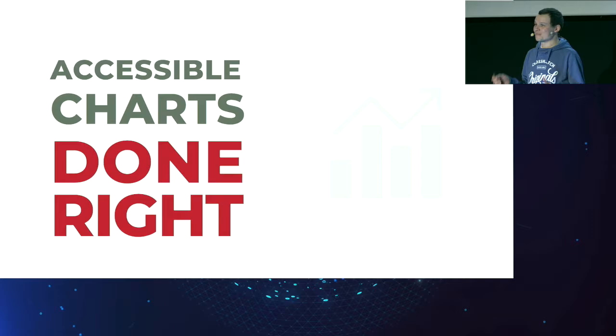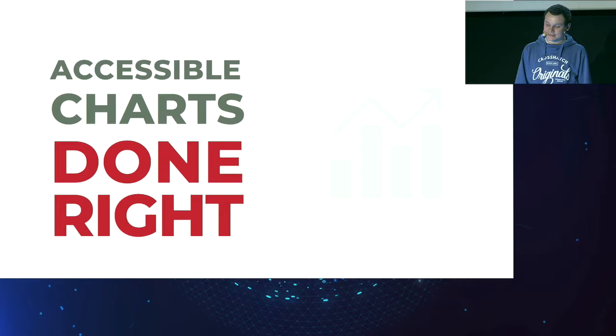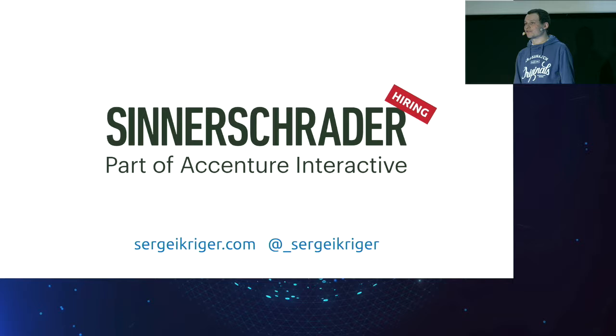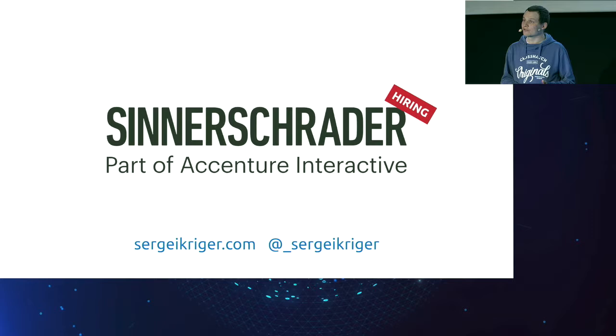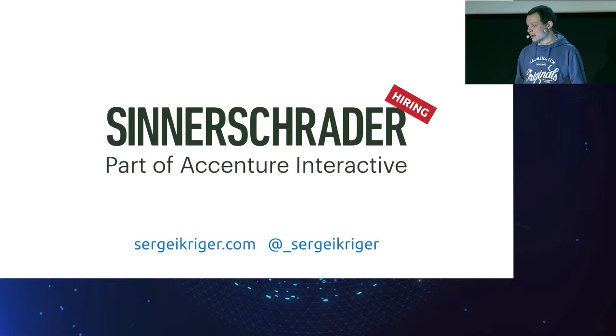Hello, everybody. Thank you very, very much for coming and for the organizers of this event. My name is Sergei Krieger. I'm a front-end developer from the company called Sinashrader. It's a web agency located in Germany, with the main office in Hamburg and offices in Berlin, Frankfurt, Munich, and Prague. We build web applications for clients like Allianz, Audi, BMW, and many others. Besides front-end development, I'm super interested in accessibility — and that's what we're going to talk about today.